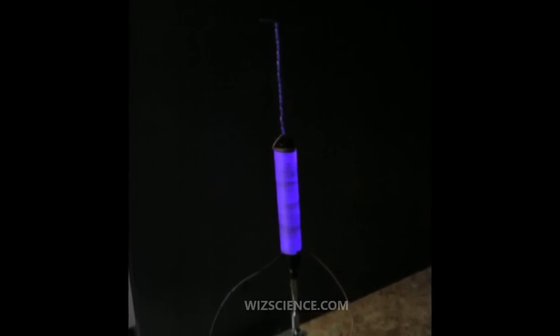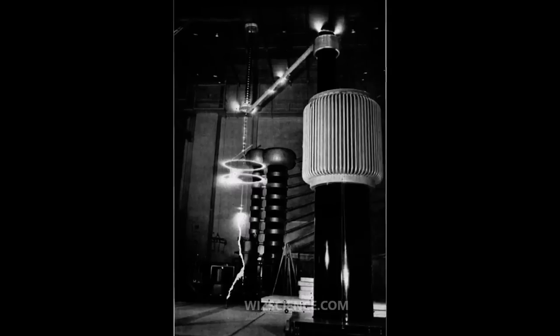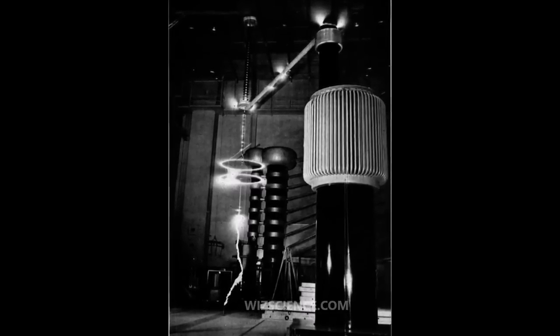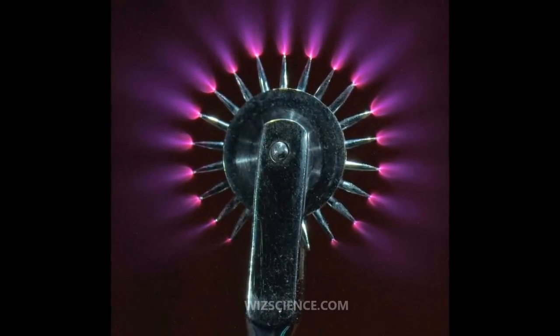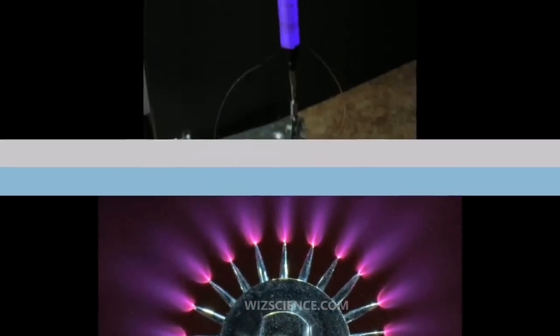Spontaneous corona discharges occur naturally in high voltage systems, unless care is taken to limit the electric field strength. The corona will occur when the strength of the electric field around a conductor is high enough to form a conductive region, but not high enough to cause electrical breakdown or arcing to nearby objects.